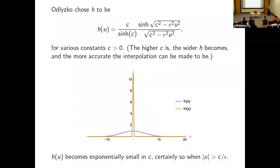The width of the interval where h is non-negligible determines the length of the sum needed in the interpolation formula.